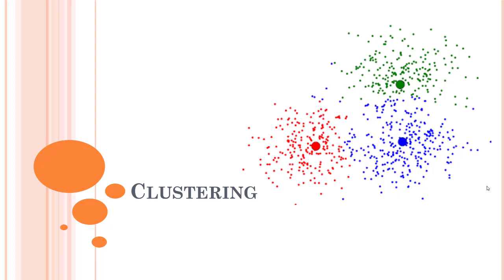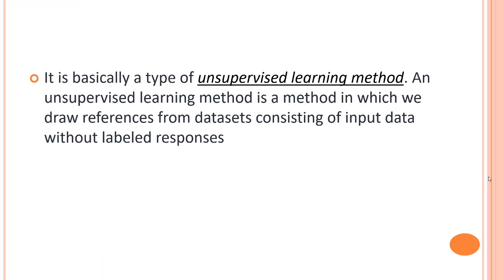Let me explain what we mean by clustering by going back to our classification algorithm. Let's say you visited a park and you saw five or six types of flowers — a rose, tulips, and other varieties. To classify each of those flowers into different groups is what we know as classification: assigning each flower to a labelled class based on what it is.